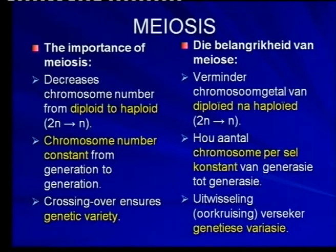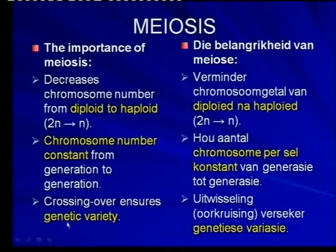Meiosis also means that the chromosome number is kept constant from generation to generation. And during crossing over in Prophase 1, meiosis also ensures genetic variety — it is meiosis that makes it so that no two of us look the same, except perhaps identical twins.